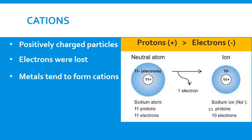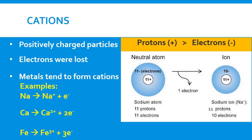When sodium loses an electron to form its ion, we still have 11 protons — that does not change. Changing the number of protons would change the identity of the element, and that does not happen here. We lost one electron, reducing it to 10 electrons. So we have one more proton than electron, giving us a positive charge. A metal losing one electron gives a +1 ion, two electrons gives +2 like calcium, and three electrons gives +3 like iron.